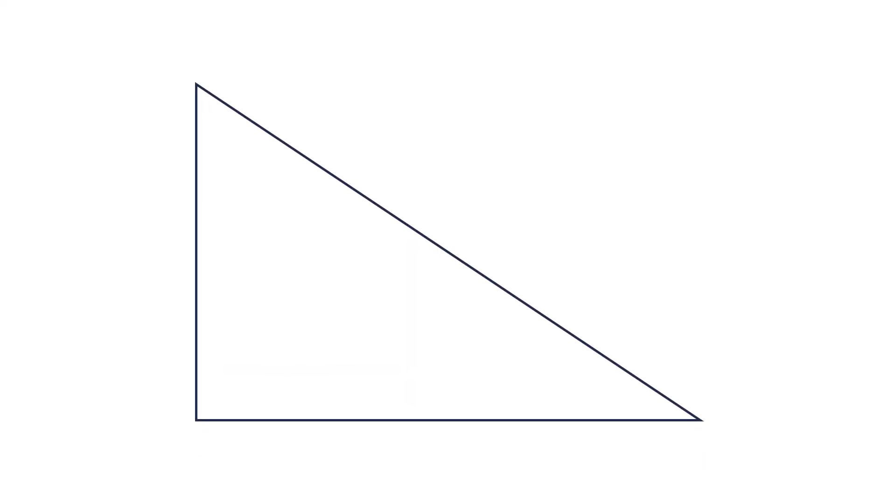We're given a right-angled triangle, and there's a square placed inside it, just like in the picture. The length of this side is 2, and this length is 3. Can you figure out the area of the square? Take a moment to think about it.